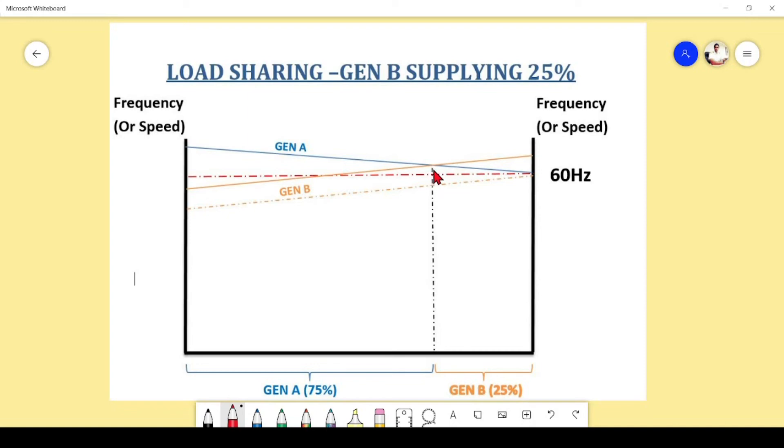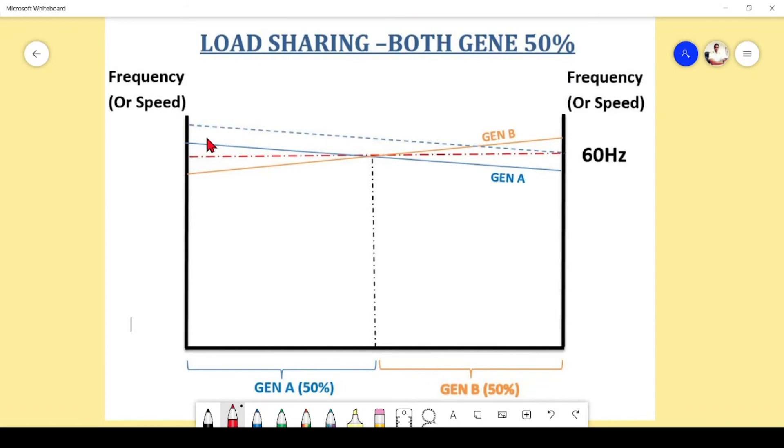Now we have to take down the speed of generator A. In this diagram we can see that we have lowered generator A speed, so the crossing point came to here at center. Both generators are sharing equally, 50 percent load, and the system frequency is remaining 60 hertz. So by adjusting the speed of both generators, we can vary the operating point of which generator is taking how much percentage of the load.